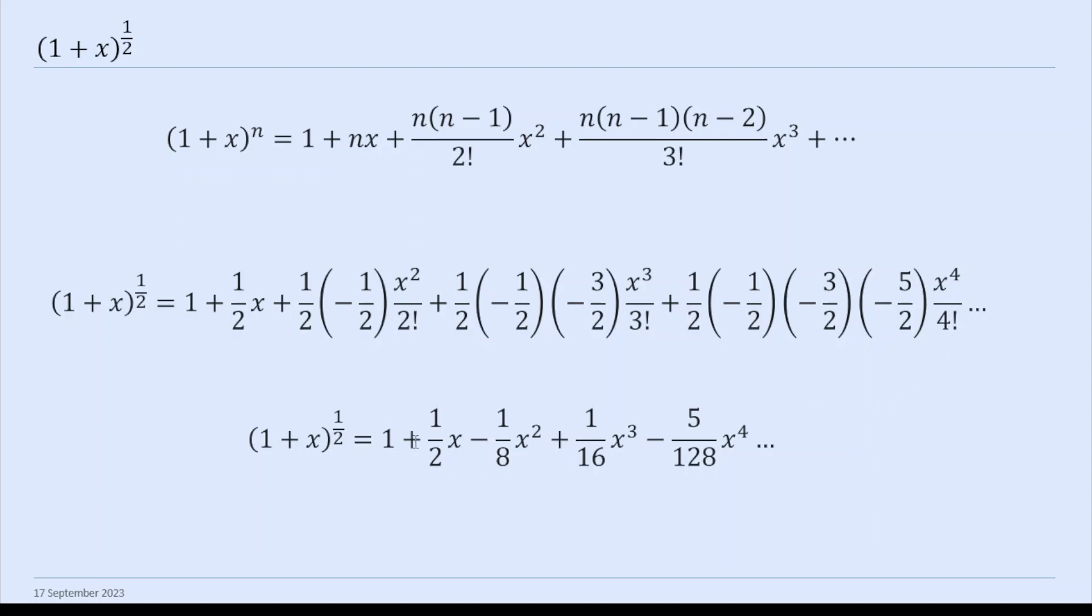And here we've just worked these out. So this is just a half x and then this is minus 1 eighth x squared. And this is, we've got 3, this 3 cancels with this 3 down there. So now you've got 2, 4, 8, 16, which is why it's plus 1/16 here.